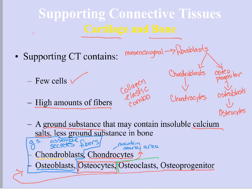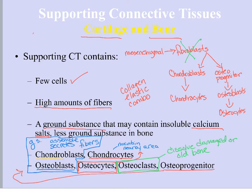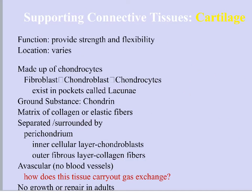Osteoclasts come from a completely different cell line — they do not originate from fibroblasts. These are essentially very large multinucleated macrophages, and what they do is dissolve old or damaged bone. When we get to the skeletal system I'll talk more about those.